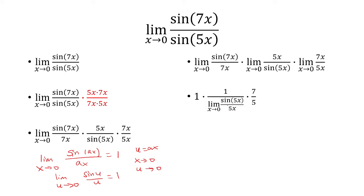Now, I did an extra step over here. I want it in the form of sine of ax over ax, so I just did 1 over the reciprocal. Note that this limit is 1. The x's here cancel, so you're left with 7 fifths.